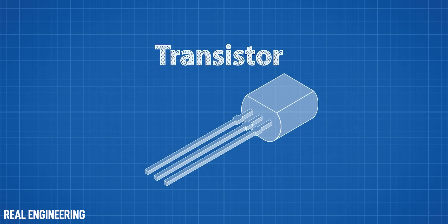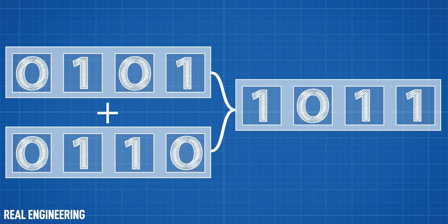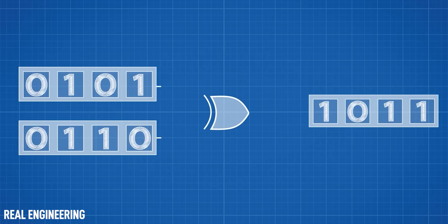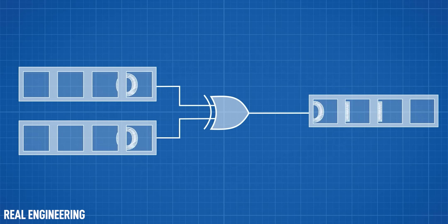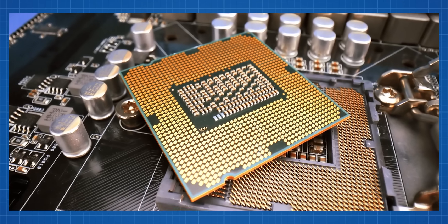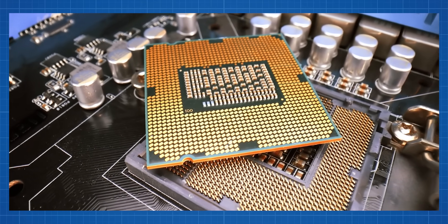Transistors are the fundamental building blocks of all chips. At a high level, they're just switches that are responsible for all the ones and zeros by turning electric currents on and off. One way to measure the performance of a chip is by its transistor count.